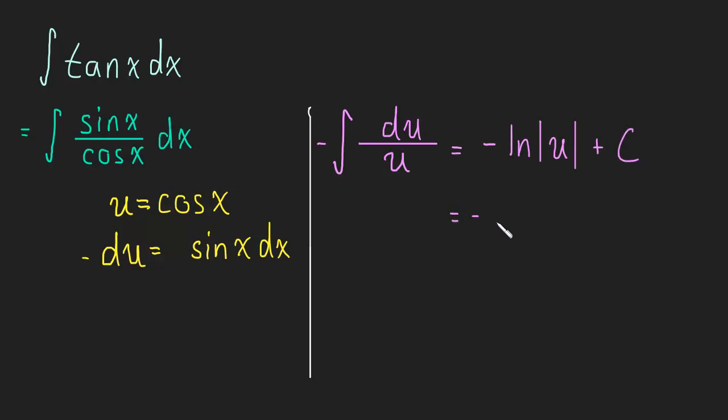What is u? u was cos x. So this is negative the natural log of the absolute value of cos x plus c.